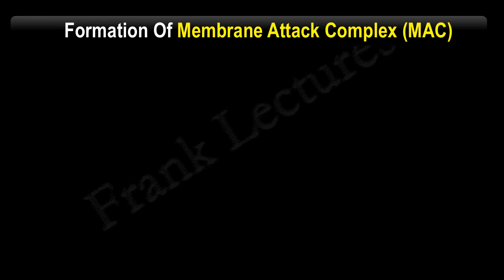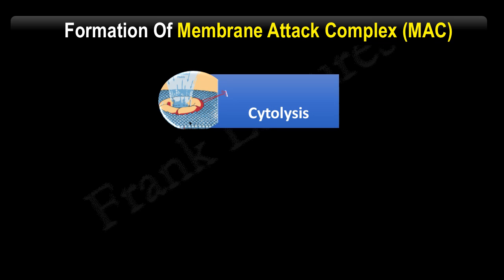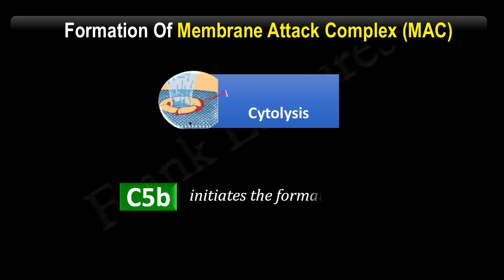The membrane attack complex is a structure formed by complement proteins. It forms holes or pores in the microbial cell membrane and results in the destruction of the microbe by cell lysis. C5b initiates the formation of the membrane attack complex.